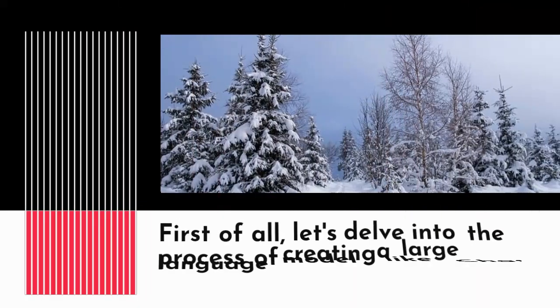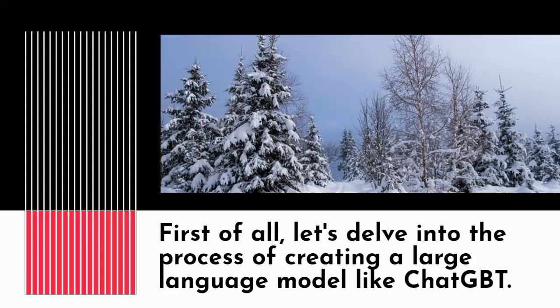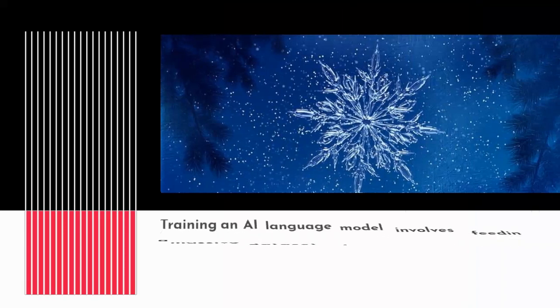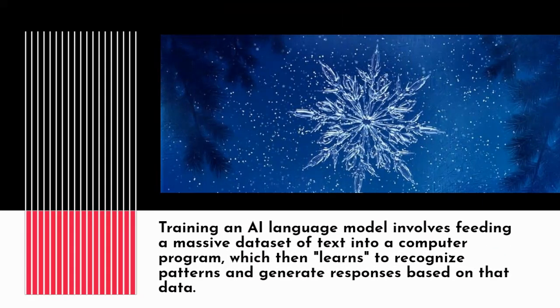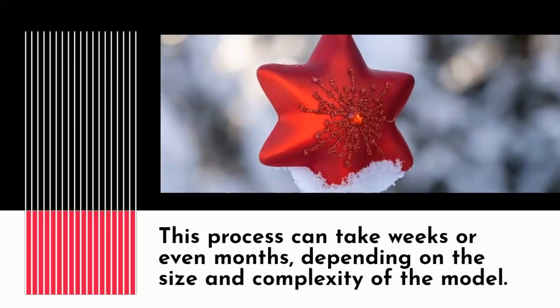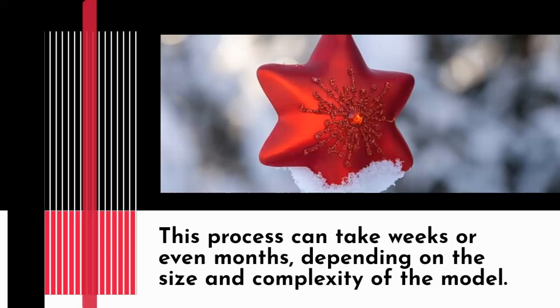First of all, let's delve into the process of creating a large language model like ChatGPT. Training an AI language model involves feeding a massive dataset of text into a computer program, which then learns to recognize patterns and generate responses based on that data. This process can take weeks or even months, depending on the size and complexity of the model.